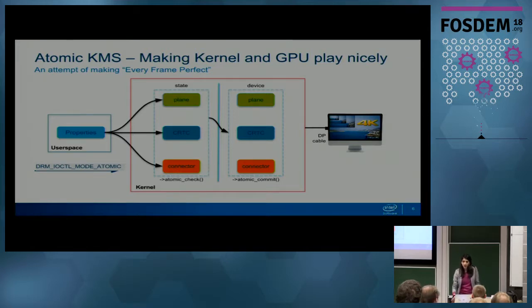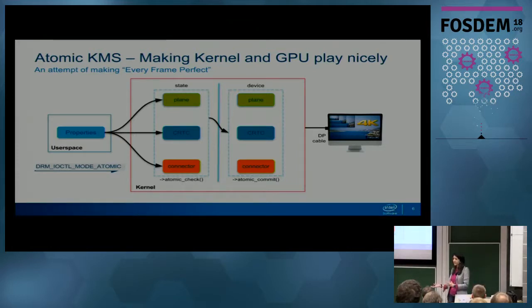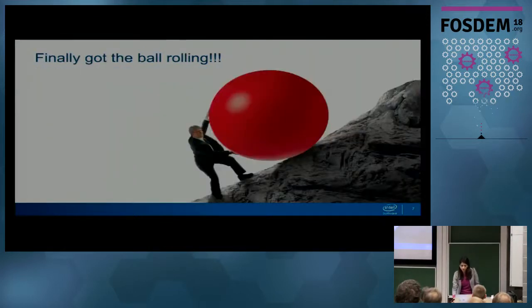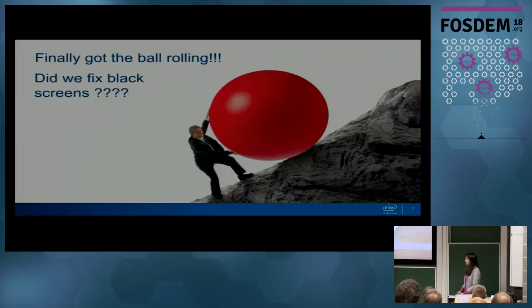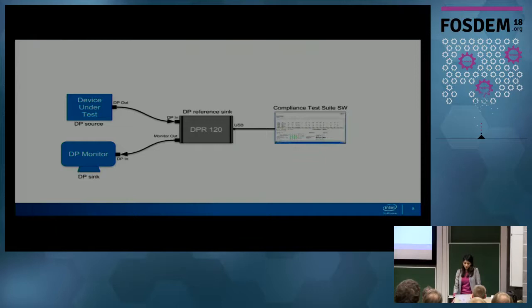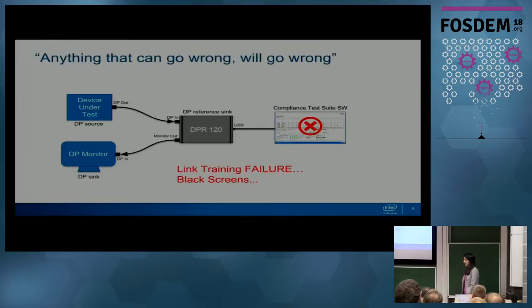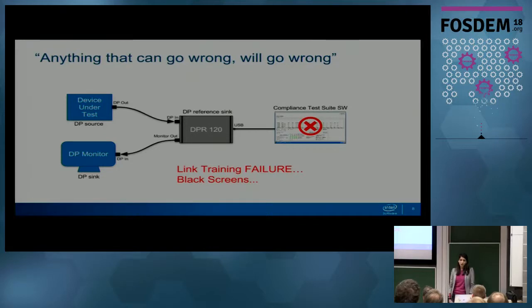I thought: the atomic mode setting is validating the state in the atomic check phase, then writing everything to hardware, so it should work. But did we actually fix the black screens? I ran the test suite, and when DPR120 tried to introduce link training failures, the driver was not able to recover from those failures - it was just a black screen.